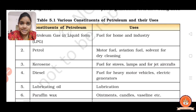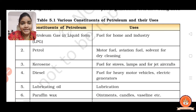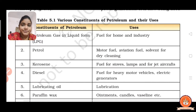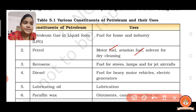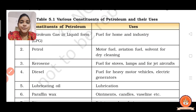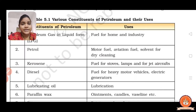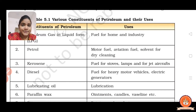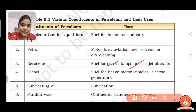The second substance is petrol. If we heat crude oil or petroleum to approximately 150 to 200 degrees Celsius, we get petrol, which is used as motor fuel, aviation fuel, and as a solvent for dry cleaning. The next substance is kerosene — if petroleum is heated to approximately 150 to 200 degrees Celsius, we get kerosene, which is used as fuel for stoves, lamps, and for jet aircraft.